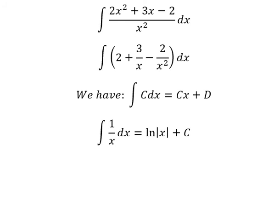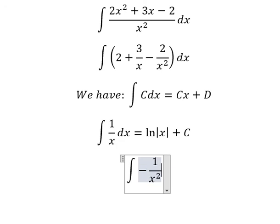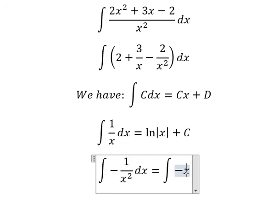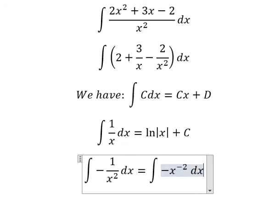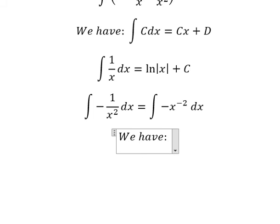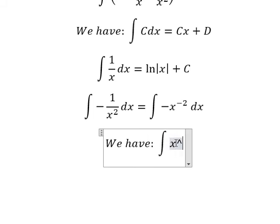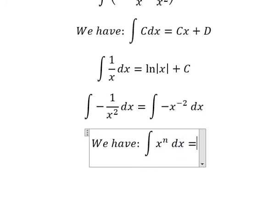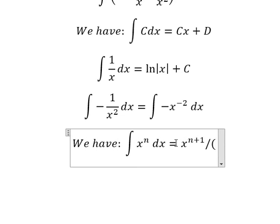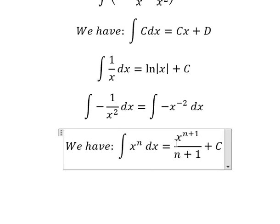The integration of -1/x² ds — we can transform this into negative x to the power of negative 2 ds. We use the formula: the integration of x to the power of n ds equals x to the power of n+1 over n+1, plus C. Here n represents negative 2.